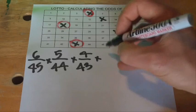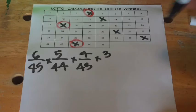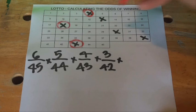The next ball—we've got three chances out of 42 balls left in the drum that can be selected.